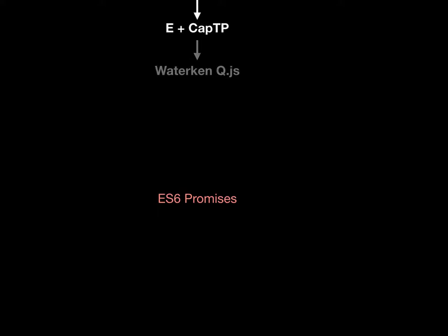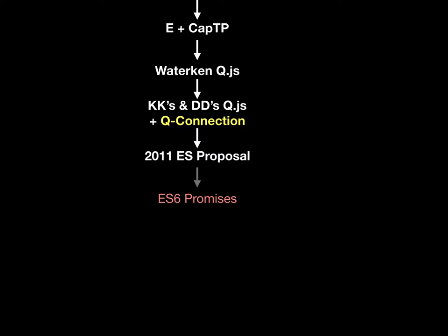Let's recap some of the history. How did we get to ECMAScript 6 promises? Those promises are essentially built almost completely out of the behavior of 'then'. Everything else is kind of decoration around the behavior of 'then'. And 'then' was, in the initial conception that led to ECMAScript promises, one of several features and was not the central feature.